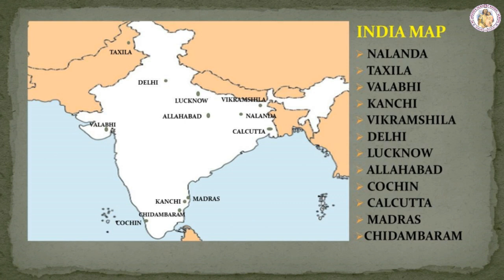Look at the outline map, children. On the north side, Taxila is given; Delhi is given; to the right of Delhi is Lucknow; to the right of Lucknow is Vikramshila; below Lucknow is Allahabad; to the right of Allahabad is Nalanda; and below Nalanda is Kolkata. On the west side is Vallabi. On the south side, Madras is given; to the left of Madras is Kanchipuram; below Kanchipuram is Chidambaram; and to the left of Chidambaram is Cochin. Go through the lesson, learn the book-back questions, and take care of yourselves. Bye.